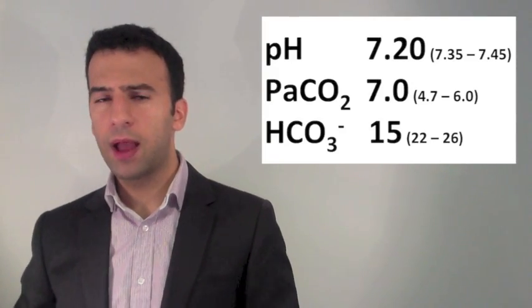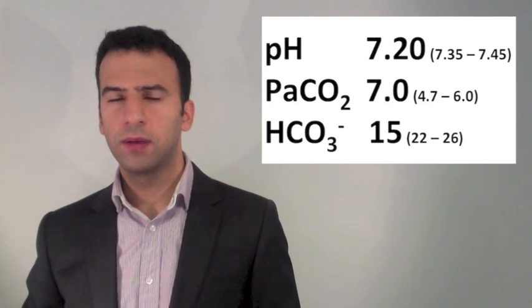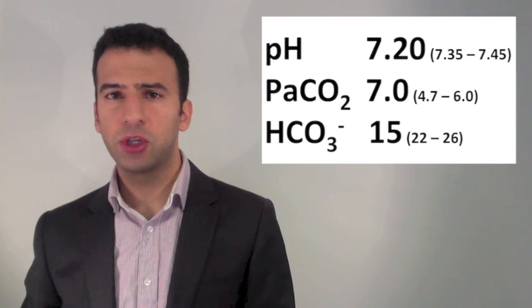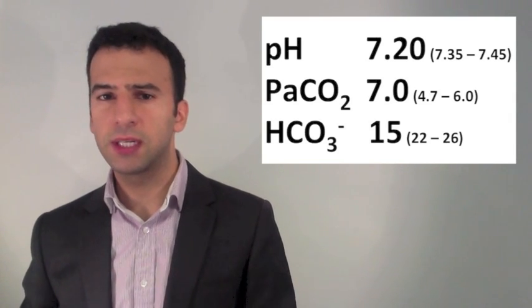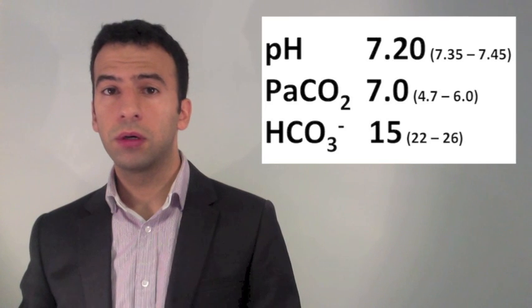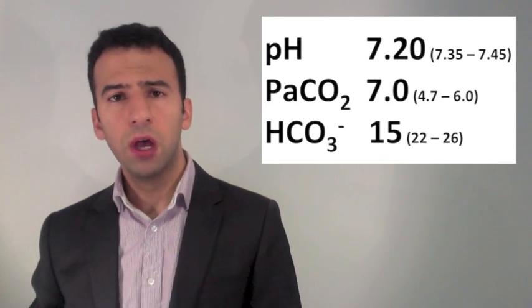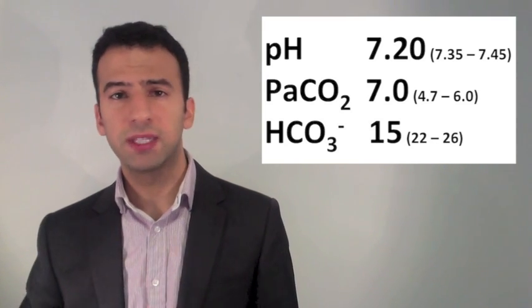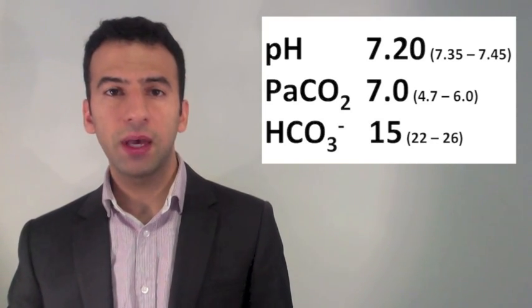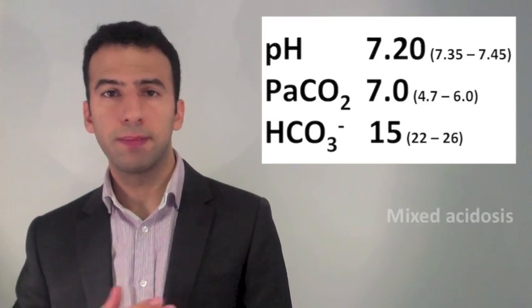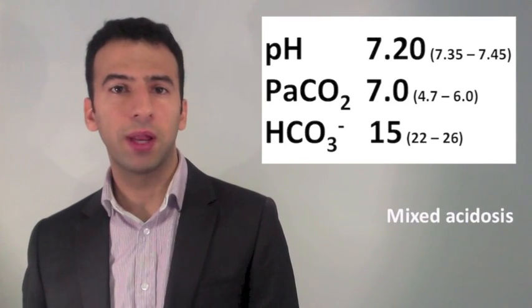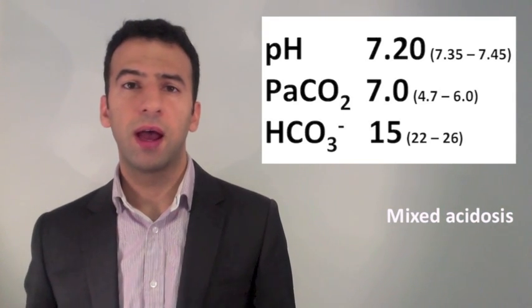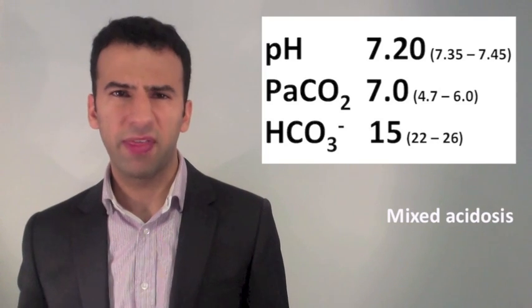And our last example — have a look at it closely. The pH is acidic. In Step 2, the CO2 is also acidic. In Step 3, the bicarbonate is also acidic. We haven't covered this possibility — well, it's not that common, but it's very simple: if everything moves in the same direction, then it's a mixed problem. So here it's an acidemia with everything moving in the same direction — a mixed respiratory and metabolic acidosis. If everything was moving in the alkaline direction, it would be a mixed alkalosis, though that is somewhat uncommon.